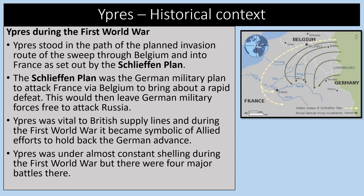Ypres stood on the planned German invasion route through Belgium and into France as set out by the Schlieffen Plan. Ypres was vital to British supply lines and during the First World War it became symbolic of Allied efforts to hold back the German advance. Ypres was under almost constant shelling during the First World War, and there were four major battles there.